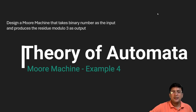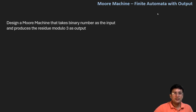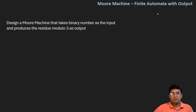In this lecture, we are taking one more example for the Moore machine. This question asks us to design a Moore machine wherein we take the binary number as the input and produce the modulo of that binary number by taking the divisor as three.